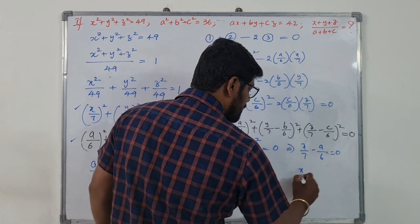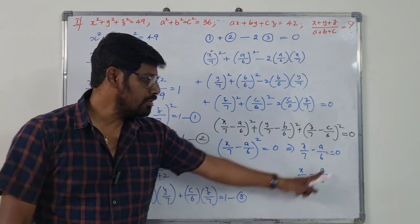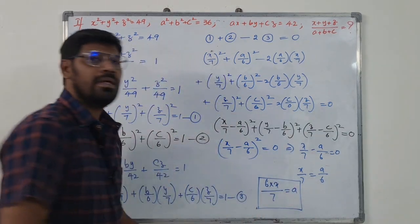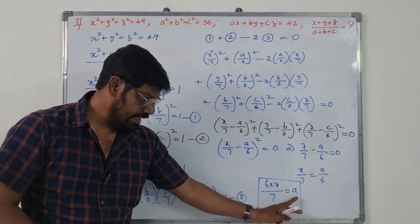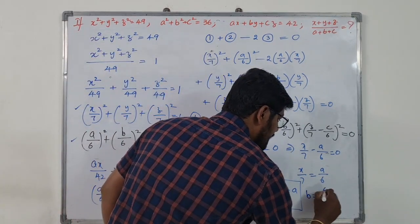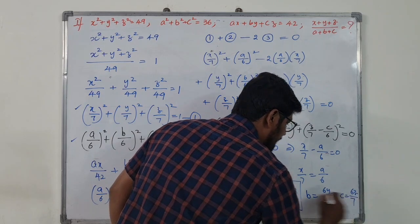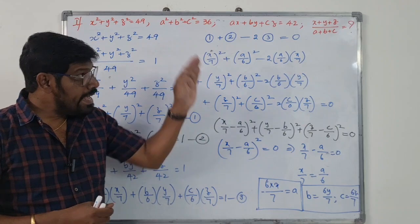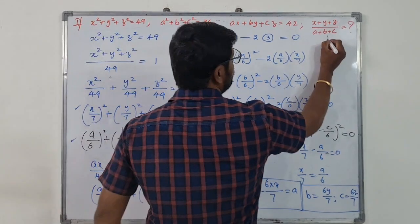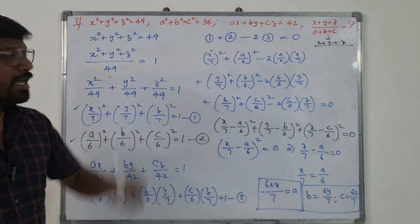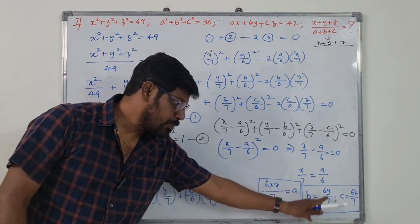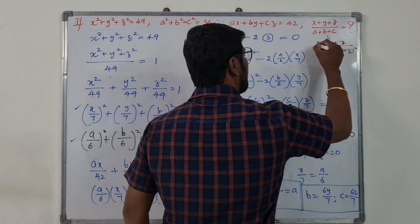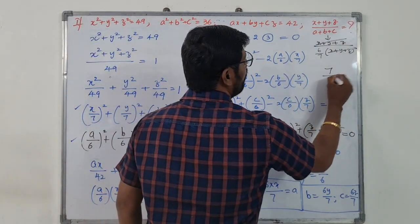Since a sum of squares equals zero, each term must be zero: x by 7 minus a by 6 equals 0, so x by 7 equals a by 6. Therefore a equals 6x by 7. Substituting into (x plus y plus z) divided by (a plus b plus c): the denominator becomes (6x by 7) plus (6y by 7) plus (6z by 7), which is (6 by 7)(x plus y plus z). The (x plus y plus z) cancels, giving the answer 7 by 6.